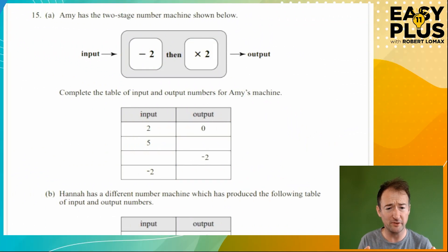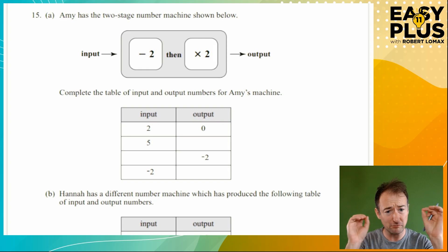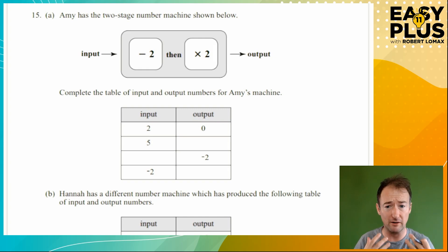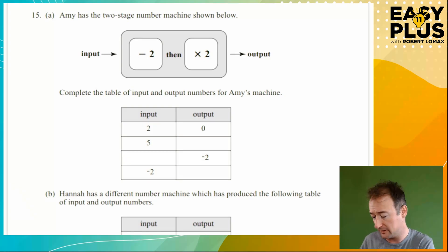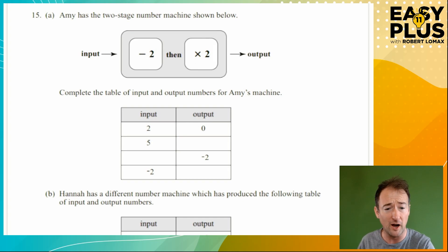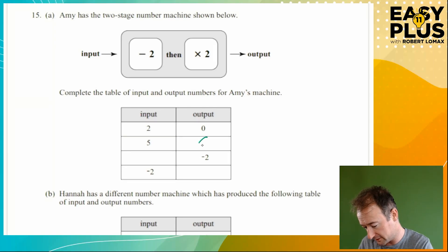Amy's number machine is relatively simple — we subtract 2 and then we multiply by 2. We need to complete the table. An input of 2 gives an output of 0, because 2 minus 2 is 0 and 0 times 2 is still 0. Input of 5: 5 minus 2 is 3, times 2 is 6.